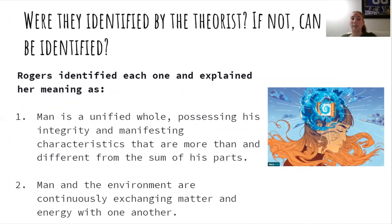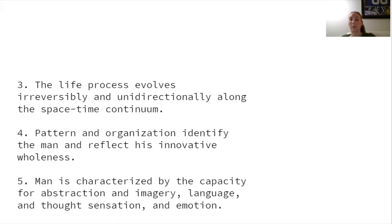Rogers identified and explained each assumption. For wholeness: man is a unified whole, possessing integrity and manifesting characteristics that are more than the sum of his parts. Secondly, openness: man and the environment are continuously exchanging matter and energy with one another. Thirdly, undirectionality: the life process evolves irreversibly and undirectionally along the space-time continuum. Pattern and organization identify man and reflect his innovative wholeness. And lastly, for sentience and thought: man is characterized by the capacity for abstraction and imagery, language and thought, sensation, and emotion.